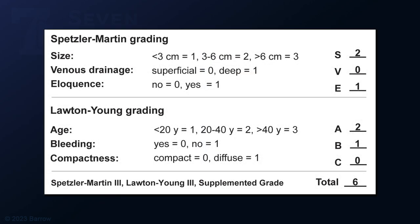AVM grading revealed this to be a Spetzler-Martin grade 3 AVM with two points for size and one point for eloquence. The Lawton-Young grade is also a 3 with two points for age and one point for a non-ruptured AVM. Her supplemented Spetzler-Martin grade was 6.